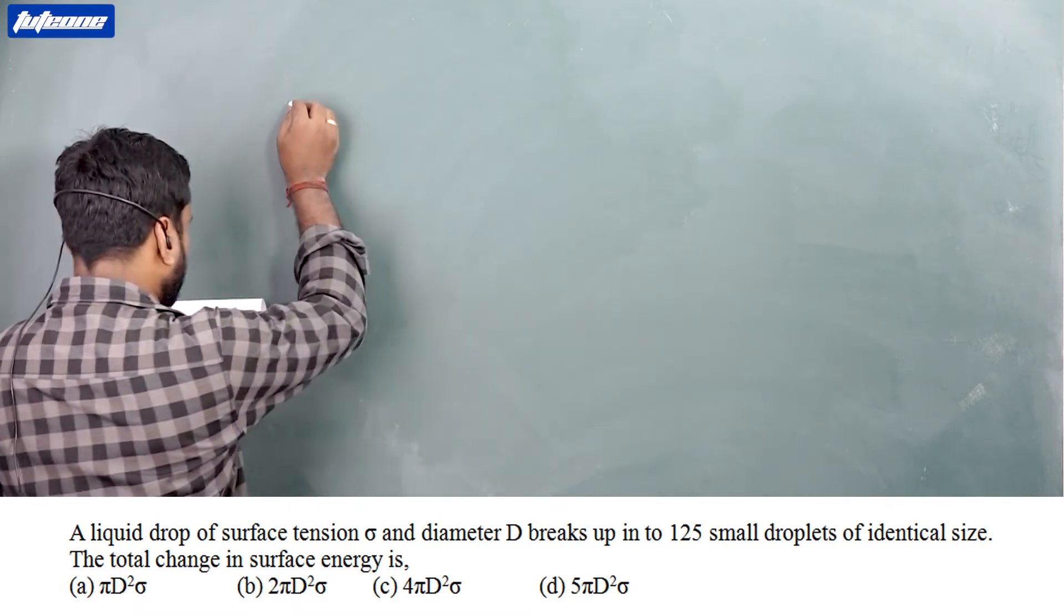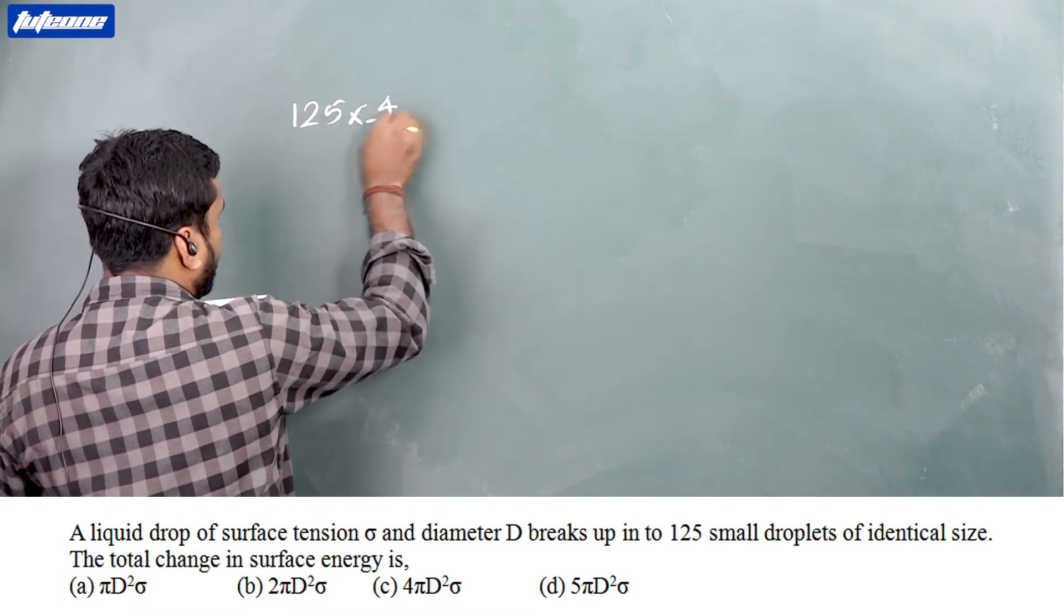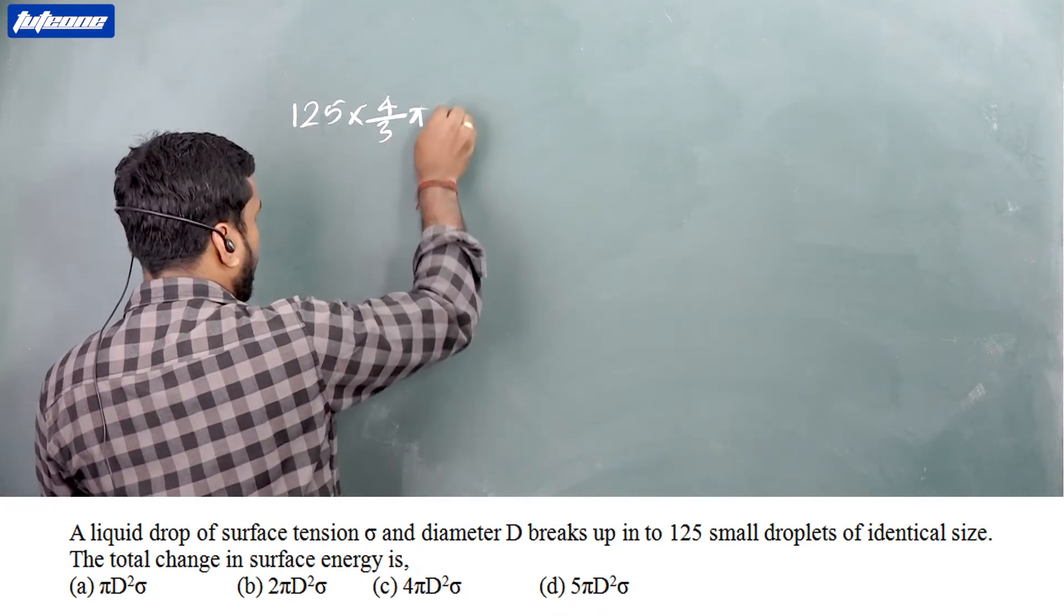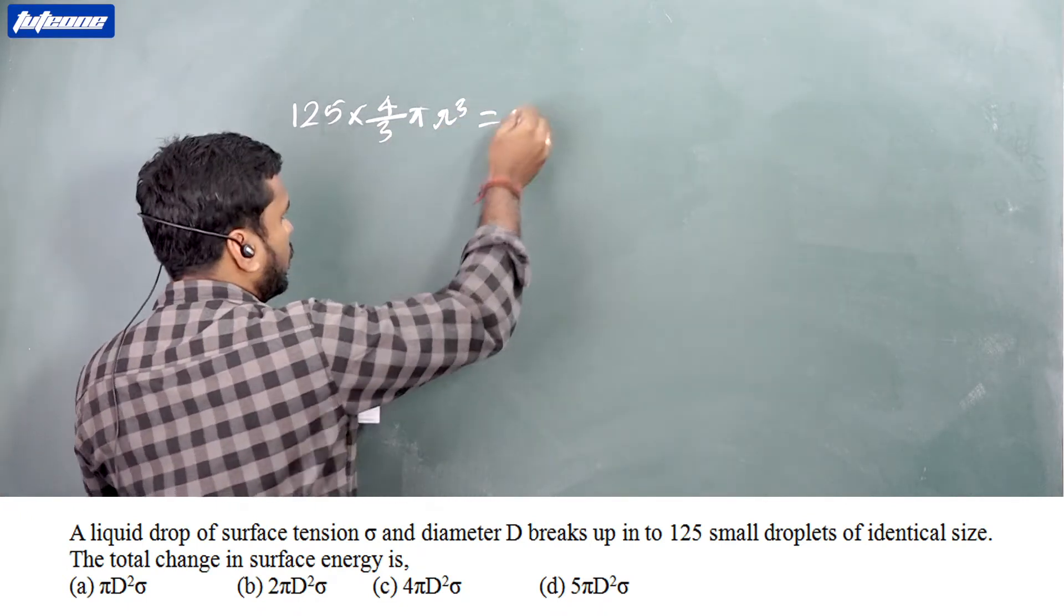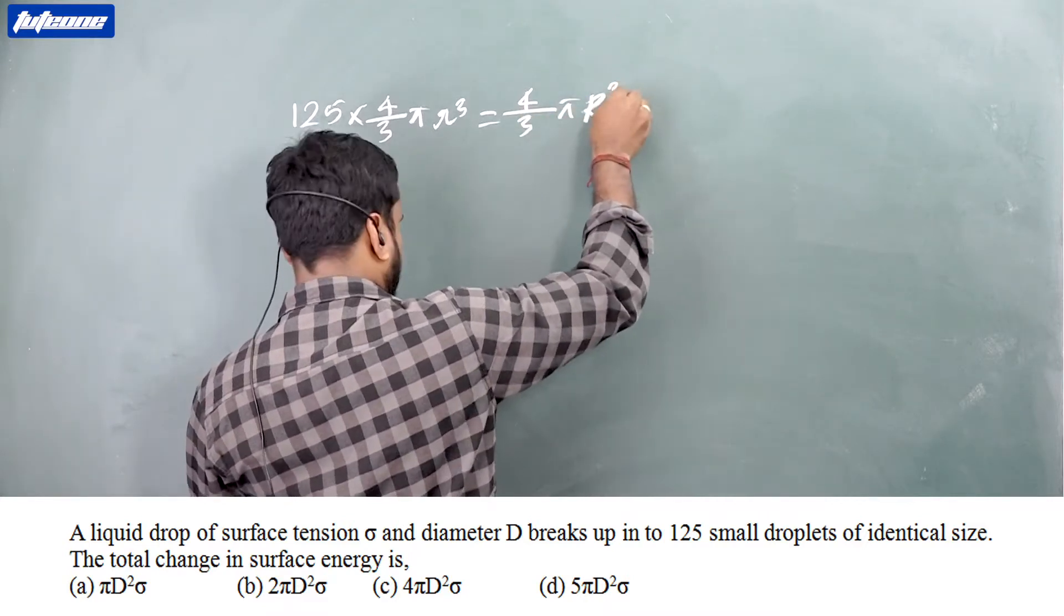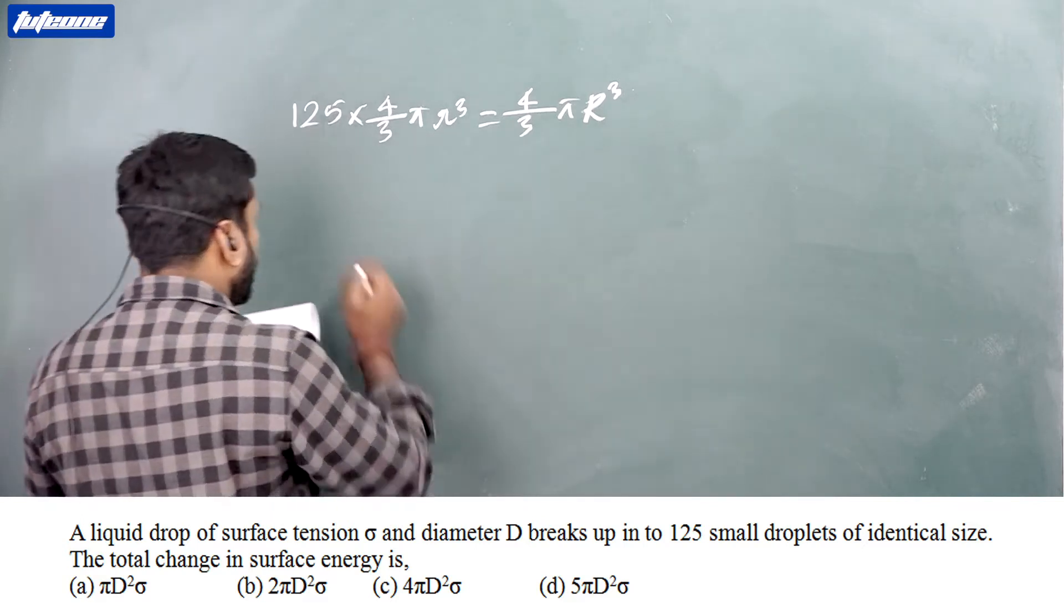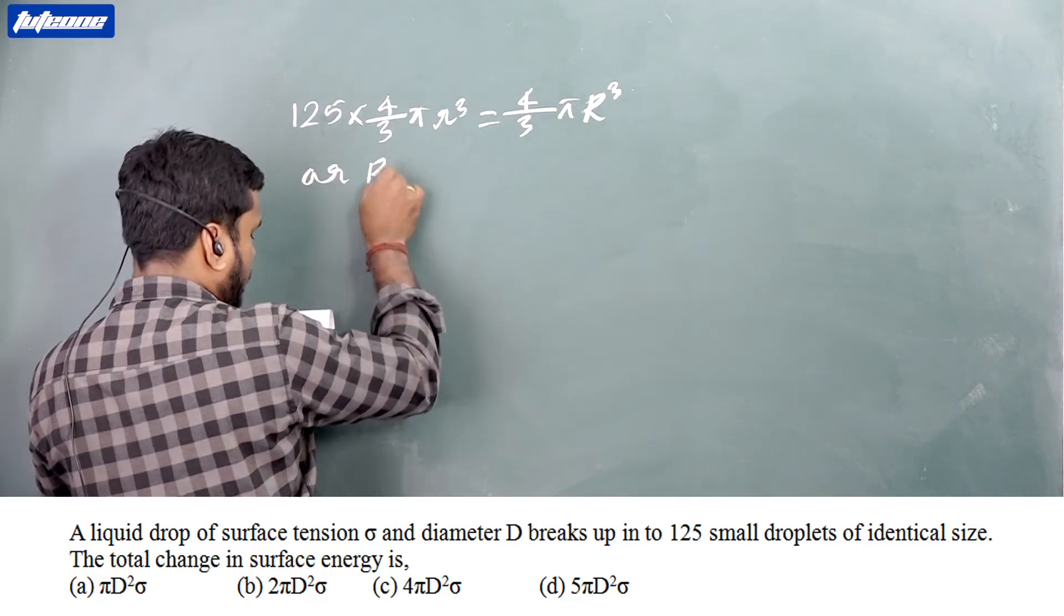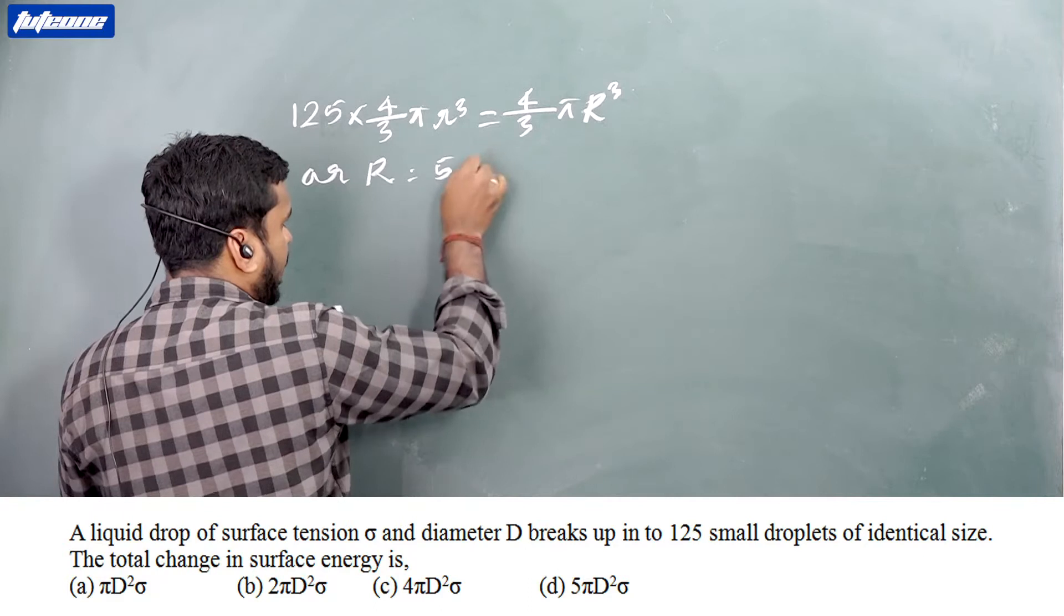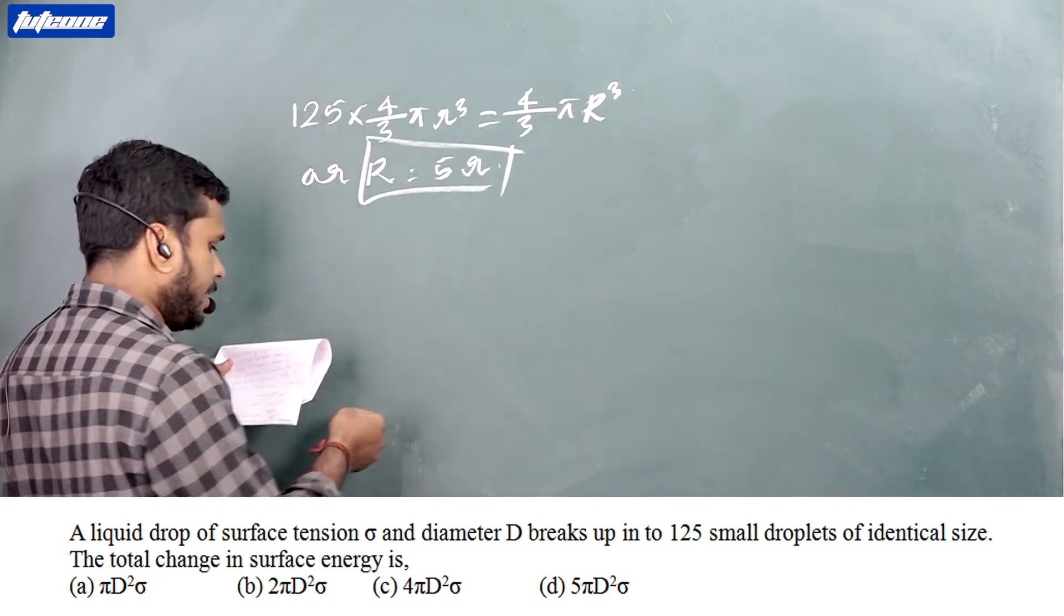We can write 125 into 4 by 3 pi r cubed is equal to 4 by 3 pi R cubed. That is, volume is remaining same. Then R is equal to 5 times small r. So here increasing surface area.